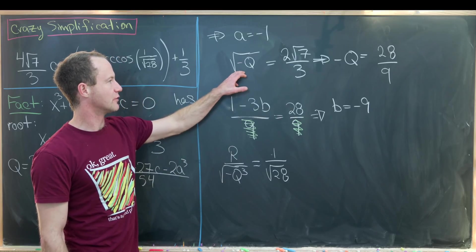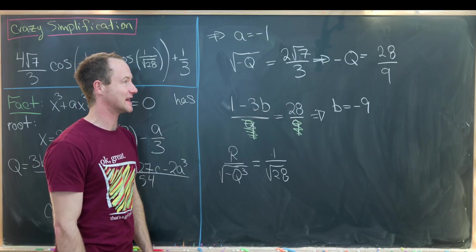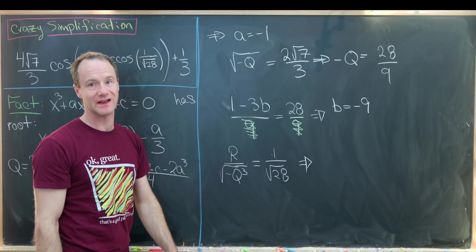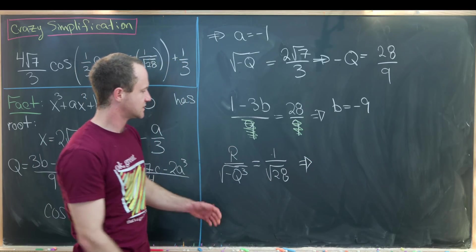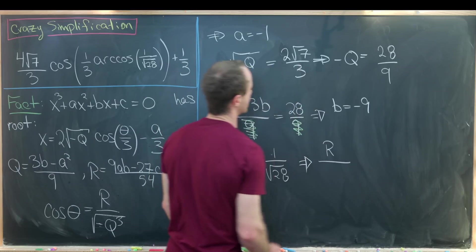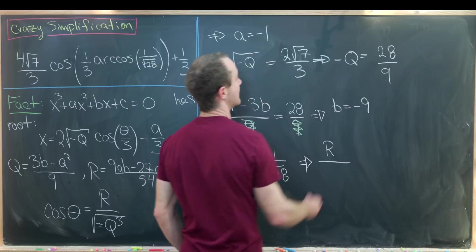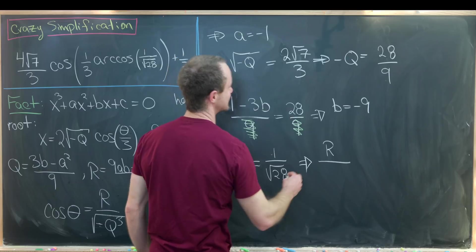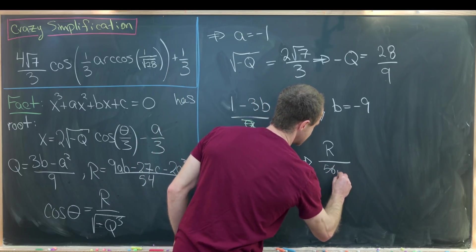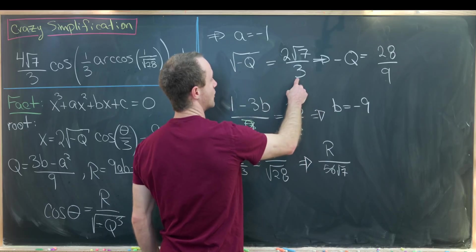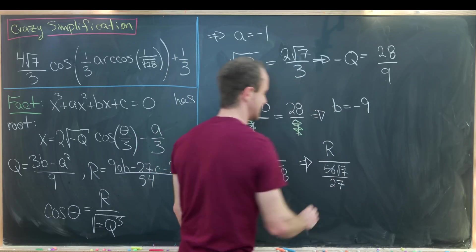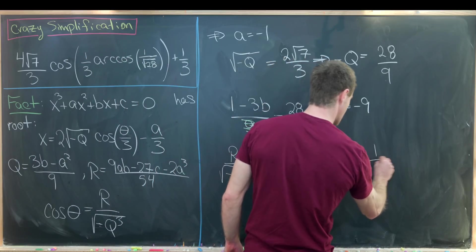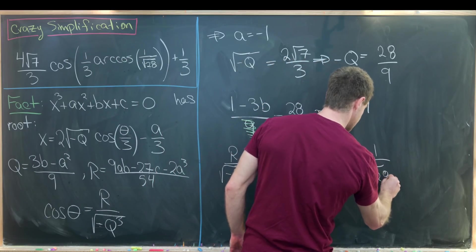We can start simplifying by working with the square root of negative q cubed. Multiplying negative q and the square root of negative q together gives the square root of negative q cubed. That leaves us with r over two times 28, which is 56, times the square root of seven over nine times seven, that is 27. So we have r over 56 times the square root of seven over 27 equals one over the square root of 28.